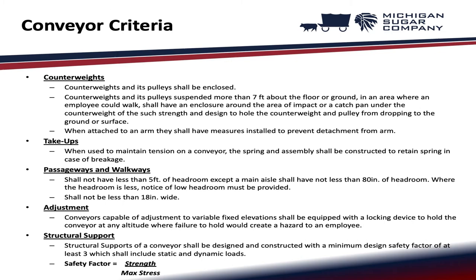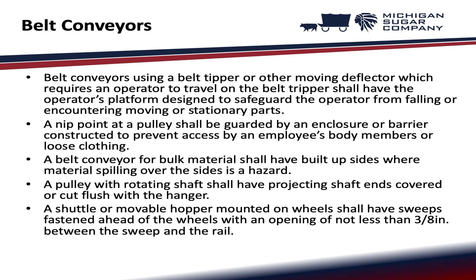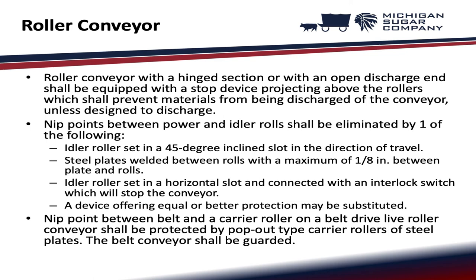Belt conveyors using a belt tripper or other moving deflector which requires an operator to travel on the belt tripper shall have the operator's platform designed to safeguard the operator from falling or encountering moving or stationary parts. A nip point at a pulley shall be guarded by an enclosure or barrier constructed to prevent access by an employee's body members or loose clothing. A belt conveyor for bulk material shall have built-up sides where material spilling over the sides is a hazard. A pulley with rotating shaft shall have projecting shaft ends covered or cut flush with the hanger. A shuttle or movable hopper mounted on wheels shall have sweeps fastened ahead of the wheels with an opening of not less than three-eighths inches between the sweep and rail.